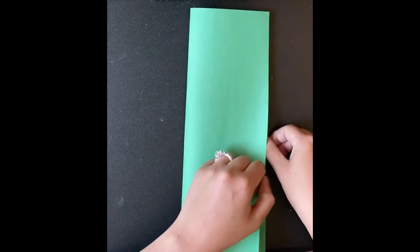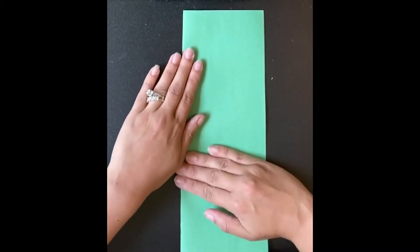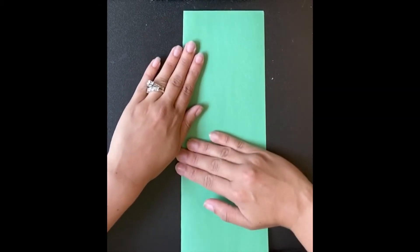Okay let's get started on making your crown. Our first step is to fold our paper in half and we're gonna fold it the long way like a hot dog. You want to really push down to make a good crease.